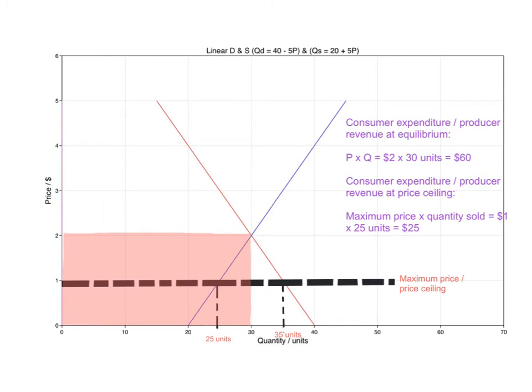Now if you were asked to compare the consumer expenditure before the price ceiling and after, basically consumer expenditure is the same as the producer revenue. At equilibrium it equals price times quantity: $2 times 30 units is $60. That's the consumer expenditure and the producer revenue if the market was left freely without any government intervention. It is represented by this red shaded rectangle right here.